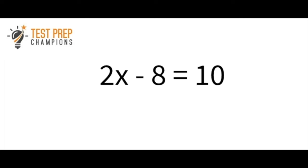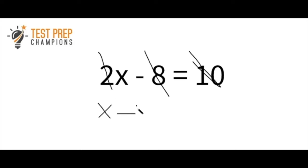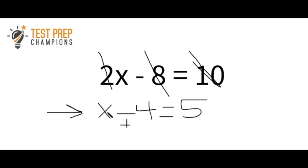The next question: 2x minus 8 equals 10. There's a shortcut here: we see the numbers 2, 8, and 10, and we can divide each by 2 to get a simpler equation. 2 divided by 2 gives x, 8 divided by 2 is 4, and 10 divided by 2 is 5. So we're left with x minus 4 equals 5. To get x by itself, we add 4 to both sides, and x equals 9. You didn't have to use this shortcut — as long as you got 9, you did it right.